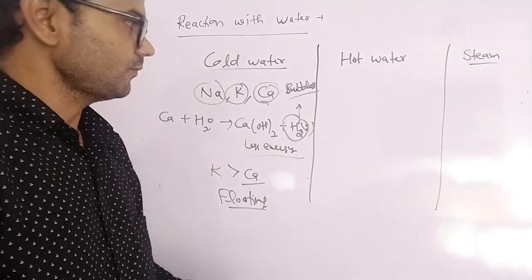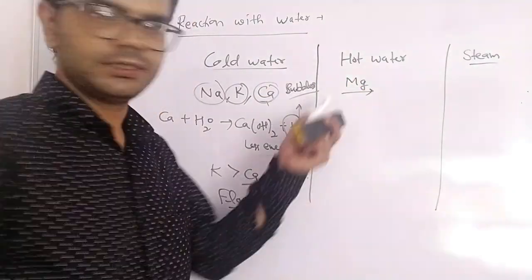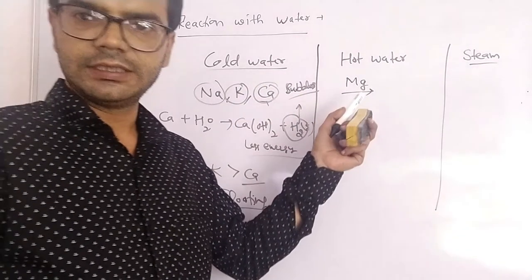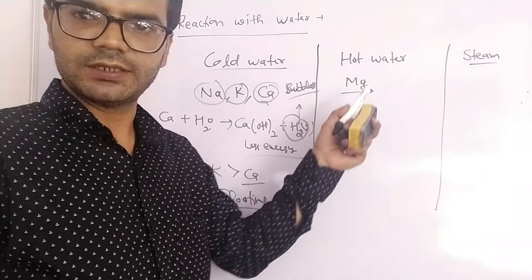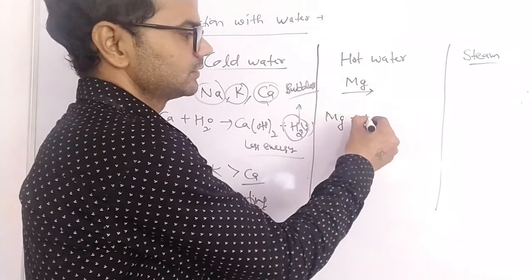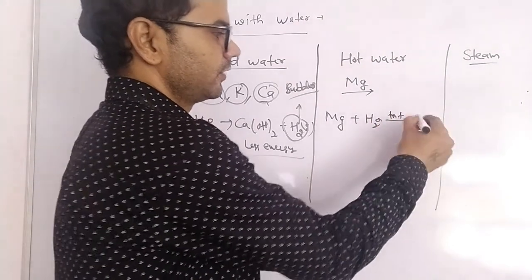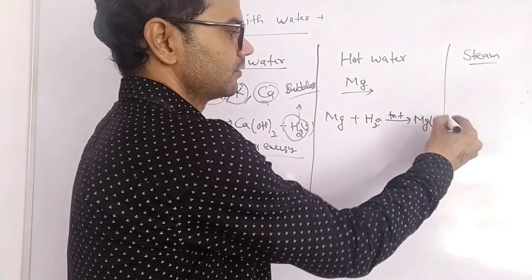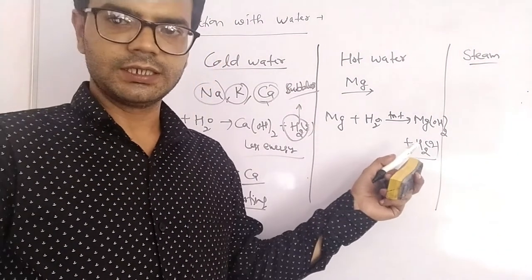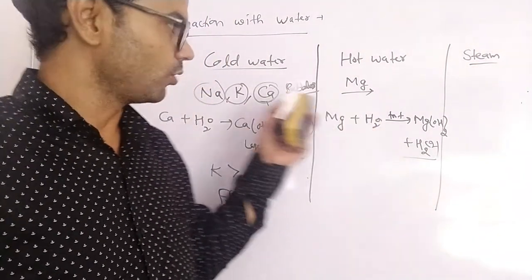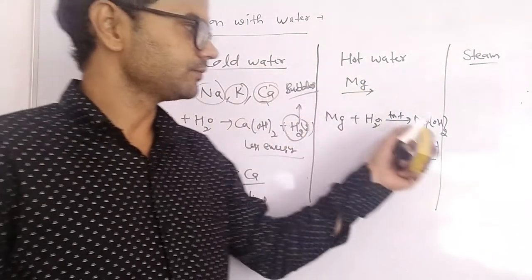Less reactive metals like magnesium will not react with cold water due to their lower reactivity — they react with hot water. Magnesium plus hot water forms magnesium hydroxide plus hydrogen gas, which is released again.